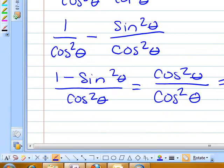So then you rewrite your problem as 1 over cosine squared theta minus sine squared theta over cosine squared theta.